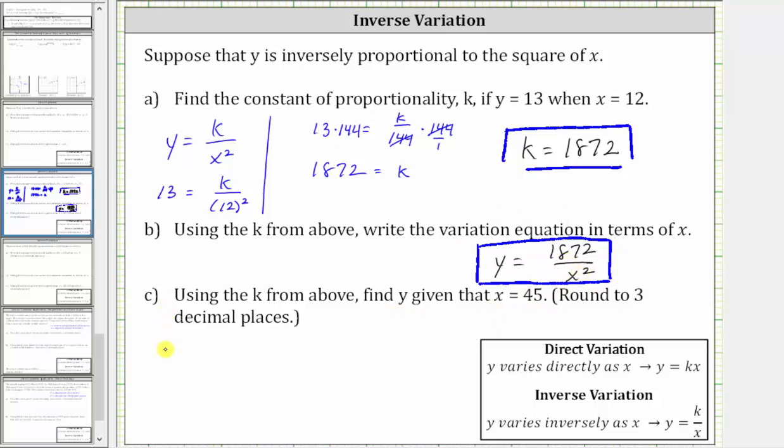So beginning with the equation, we have y equals 1,872 divided by x squared. And now we substitute 45 for x, which gives us y equals 1,872 divided by the square of 45.